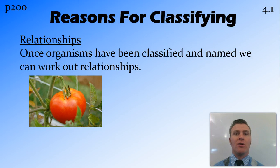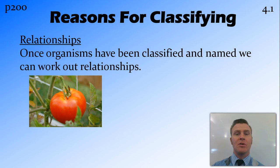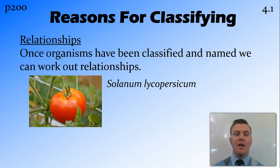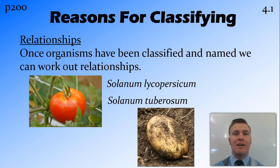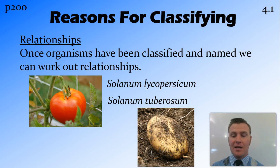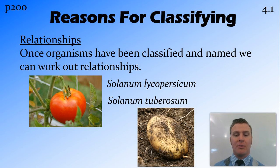Classification also helps us show relationships between organisms. Those older common names for the tomato were all talking about apples, when tomatoes aren't actually related to apples. They look a bit like apples, but they're not related to apples. Tomatoes are actually more closely related to Solanum lycopersicum, or the potato. You can see in the classification system that these names are similar because they are more closely related.